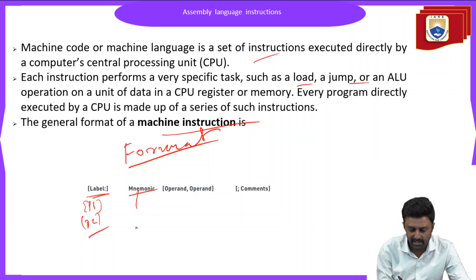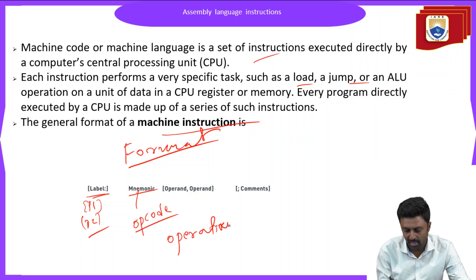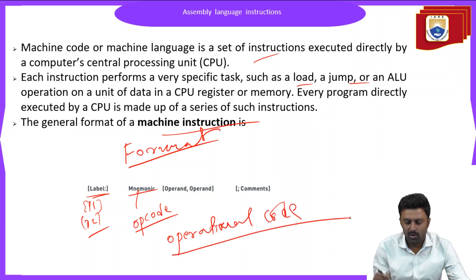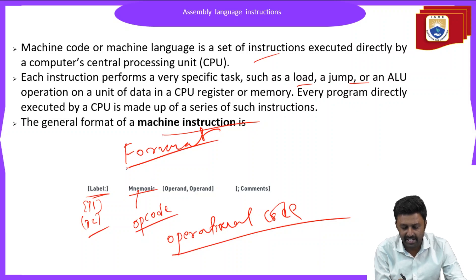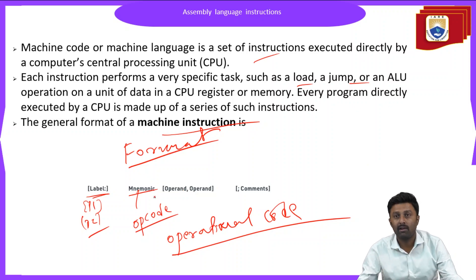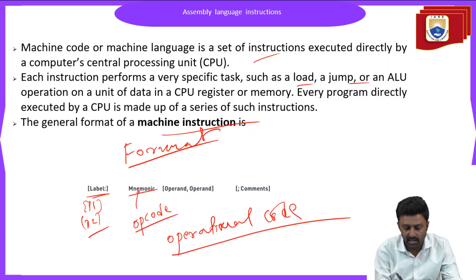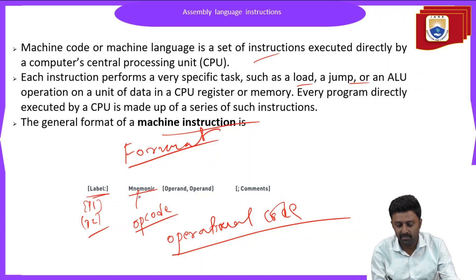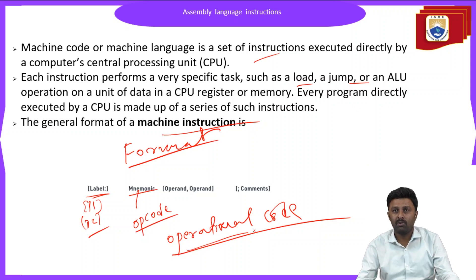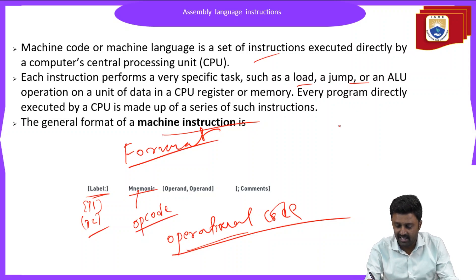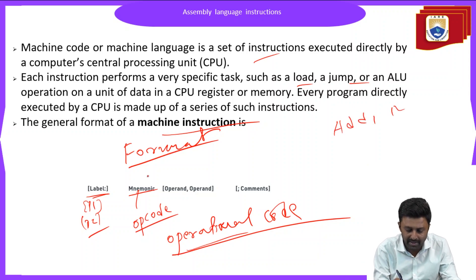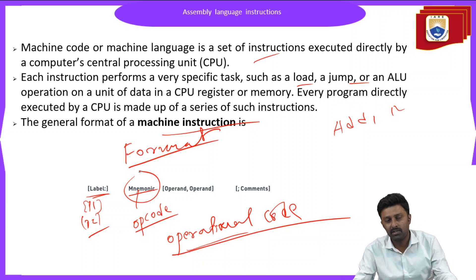The next part is the mnemonic, which consists of an opcode — that is, the operational code. The first part of any instruction, apart from the label, is the mnemonic or opcode, which indicates what operation is to be performed, whether it is an addition instruction, multiplication, or something else. The mnemonic indicates what operation the instruction is performing.